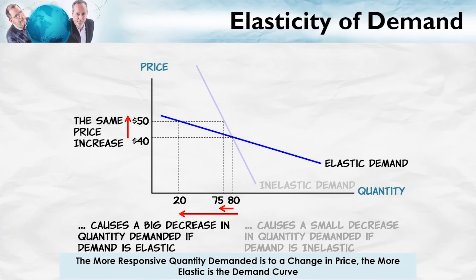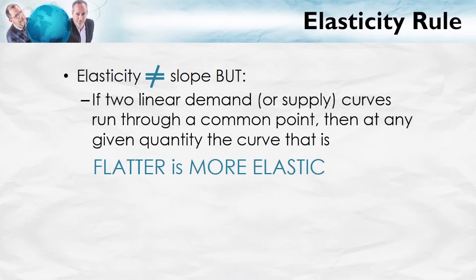You may have noticed on the previous diagrams that the inelastic curve had the higher slope — it was more vertical — while the elastic curve was the more horizontal curve. We haven't defined elasticity technically yet, but elasticity is not the same as slope; however, they are related. For this class, follow a simple rule: if two linear demand or supply curves run through a common point, then at any given quantity, the curve that is flatter — more horizontal — is the more elastic curve. So if you draw two demand curves through a common point, the flatter one is the more elastic curve.